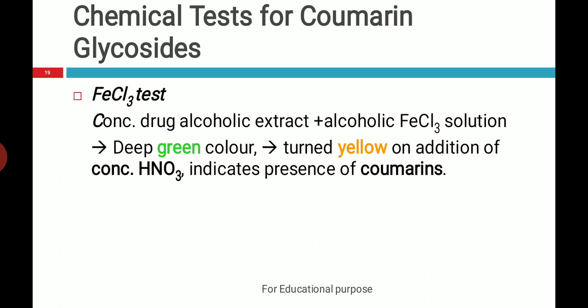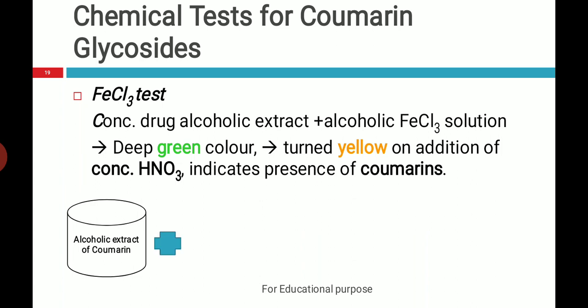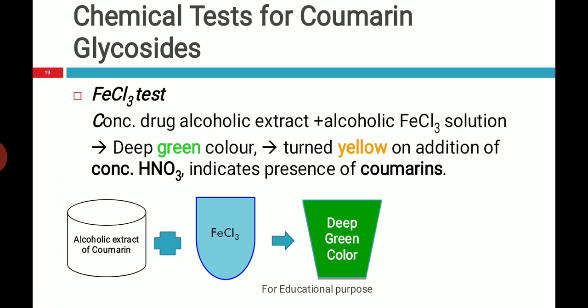Next we will see the test for coumarin glycosides. The first test is the ferric chloride test. Prepare an alcoholic extract of coumarin and prepare a ferric chloride solution in alcohol, then mix them together. You will get a deep green color. After a certain period of time you can convert that color to yellow by adding a few drops of concentrated nitric acid — that is the ferric chloride test.